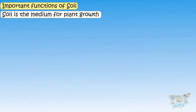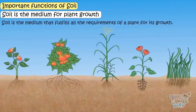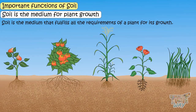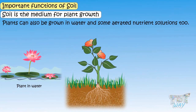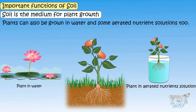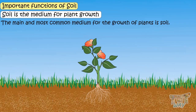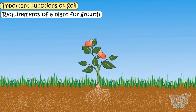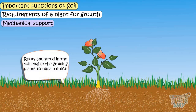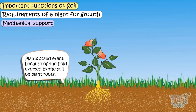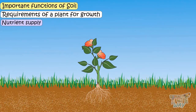Soil is the medium for plant growth. Soil fulfills all the requirements of a plant for its growth. Plants can grow in water and some aerated nutrient solutions too, but the main and most common medium for plants to grow is definitely soil. One requirement met by soil is mechanical support — roots anchored in the soil enable growing plants to remain erect, as the soil exerts a hold on plant roots.